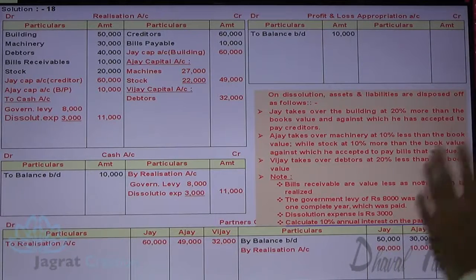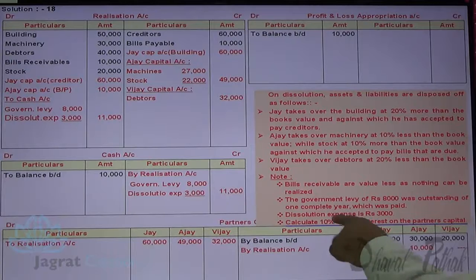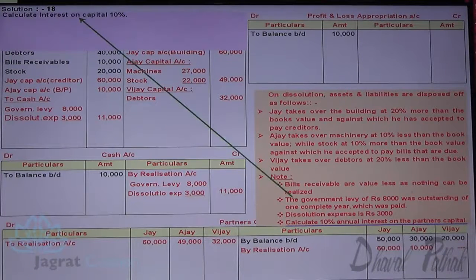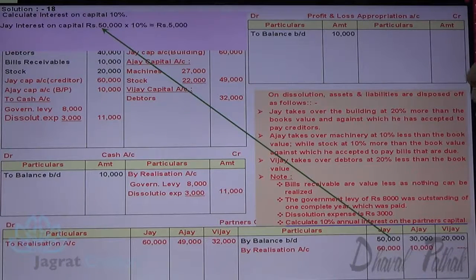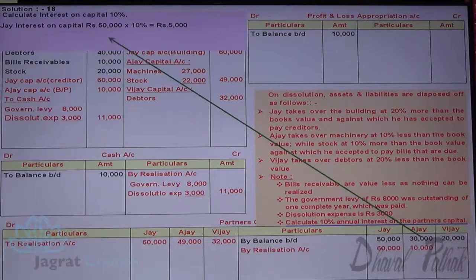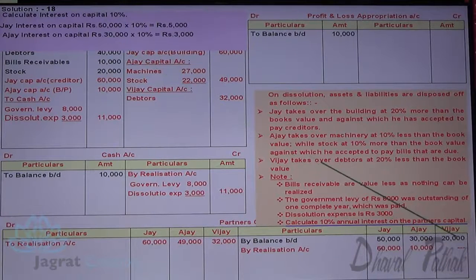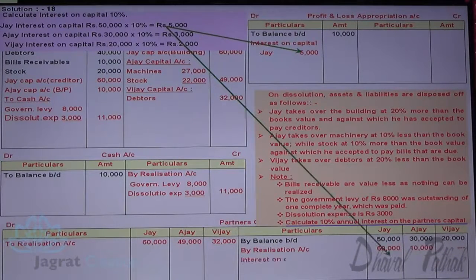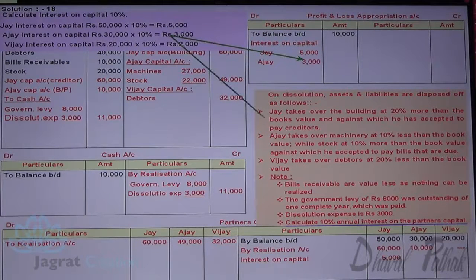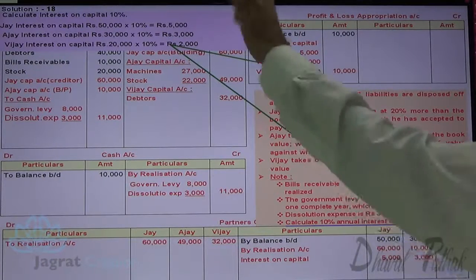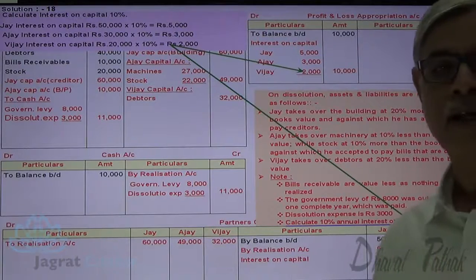Calculate 10% interest on partner's capital. Opening balances are 50,000, 30,000, and 20,000. Interest: Jay gets 5,000 (50,000 × 10%), Ajay gets 3,000 (30,000 × 10%), Vijay gets 2,000 (20,000 × 10%). Entry: profit and loss appropriation account debit to each partner's capital account credit for the respective interest amounts.